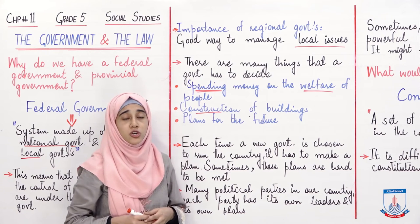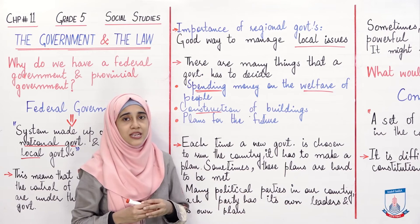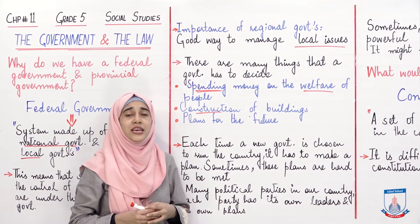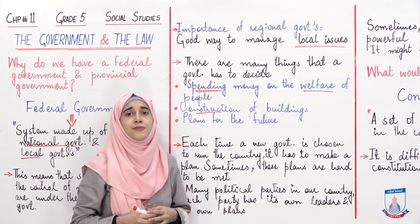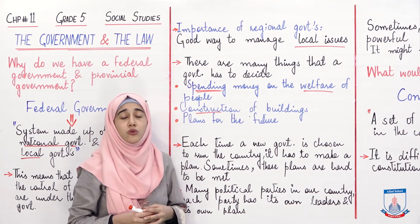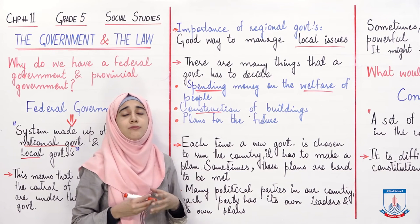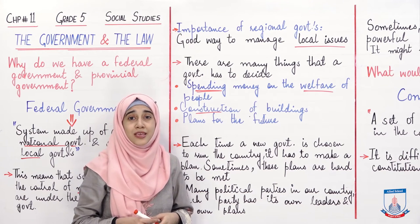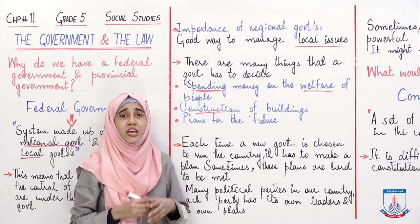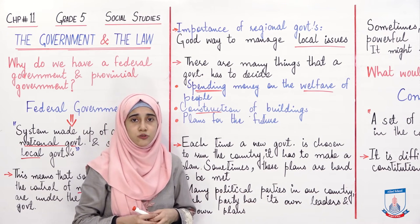Iske alawa plans for the future bhi hote hain. Agar unhonne kisi aur country ka loan wapas karna hai ya kisi bank ka loan wapas karna hai. Iske alawa future ko leke bohot se plans hote hain - unhe dekhna hai ki apne logon ko naukrian deni hain, schools banane hain, education per ghor karna hai. Phir imports kitni hain, exports kitni hain, sports mein sab kaisa chal raha hai - yeh bohot se masail hain jo basically humari government ko dekhne hote hain.